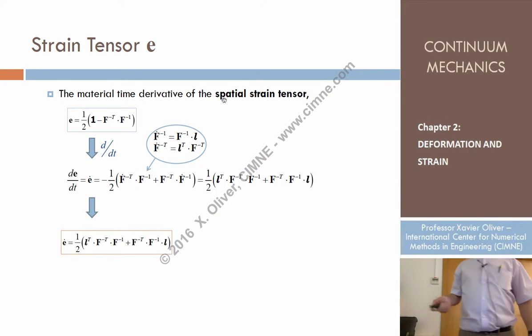Now, the spatial strain tensor, the Almansi strain tensor. Of course, we could think of the material derivative of this tensor. When I say material derivative, I mean the material derivative, not the local derivative. That means I'm thinking of a given particle. For this particle, I'm following it and measuring the Almansi strain tensor, taking the variation following the same particle. Don't get mistaken.